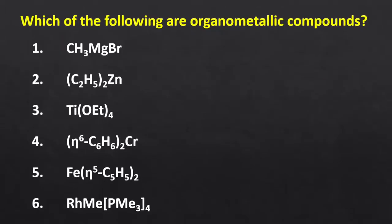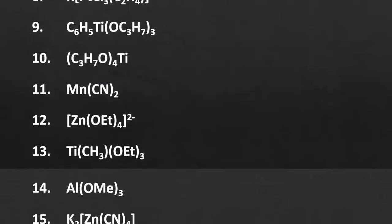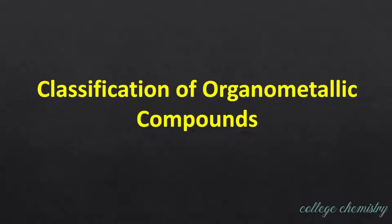I hope now you all understood and can classify whether various compounds are organometallic or not. The next topic is the classification of organometallic compounds. Based on the nature of the metal-carbon bond, we can classify organometallic compounds into five categories.